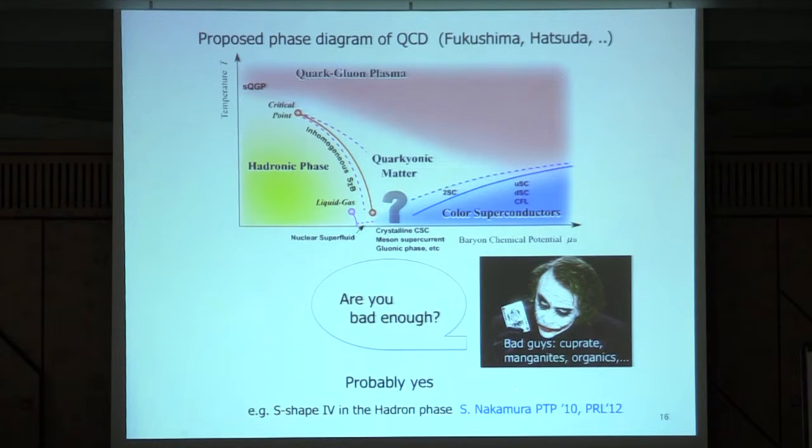One question is, everyone in this room are interested in those bad guys, bad metals, like these cuprates, manganites, ruthenates, organics, and so on. But, is QCD as bad as we want it to be? The phase diagram looks bad enough. There's many interesting lines here. And also, there's some indications. Shin Nakamura proposed that there's a S-shaped IV characteristic in the hadron phase, this part, which corresponds to the Mott insulator, if this was a cuprate.